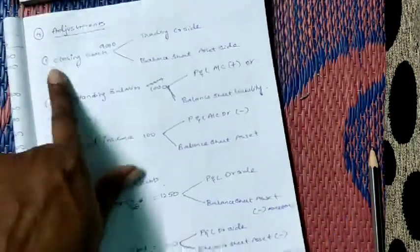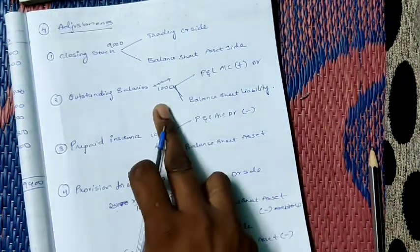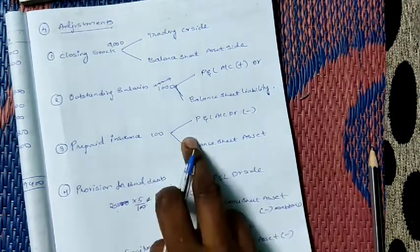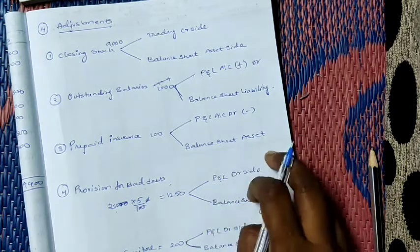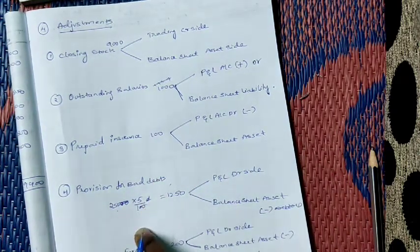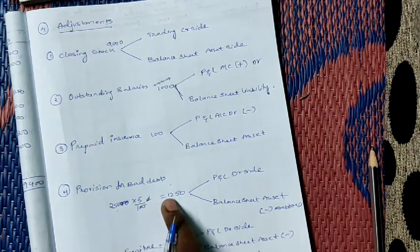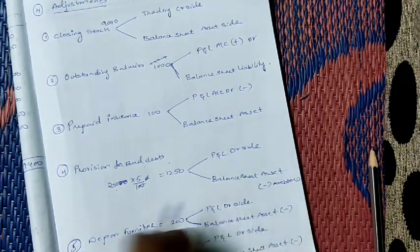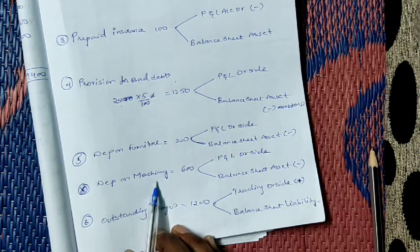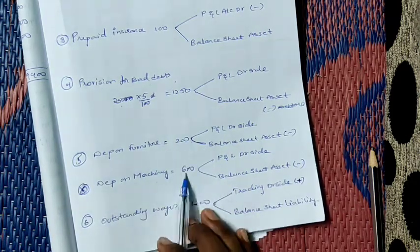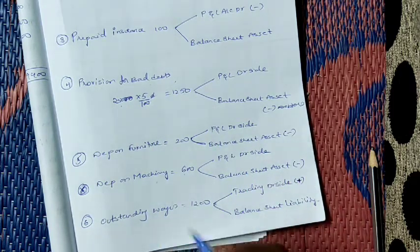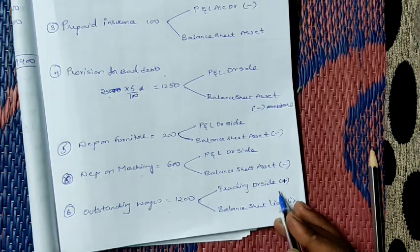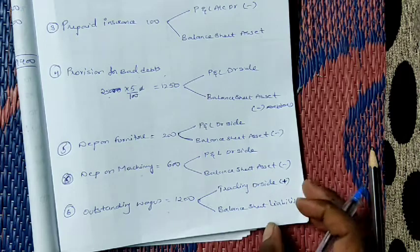To summarize all adjustments: closing stock — trading account credit side, balance sheet asset side. Outstanding salaries 1,000 — add to salaries in P&L account debit side, balance sheet liability. Prepaid insurance — P&L account debit side, deduct from insurance, balance sheet asset. Provision for bad debts 1,250 — P&L account debit side, deduct from debtors in balance sheet asset. Depreciation on furniture and machinery — P&L account debit side, deduct from concerned asset. Outstanding wages 1,200 — trading account debit side, balance sheet liability.